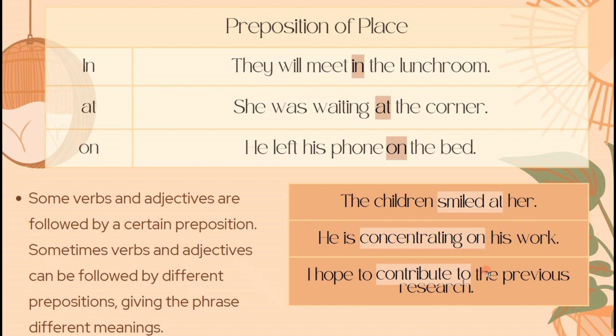Examples of preposition of place: 'in' — they will meet in the lunchroom; 'at' — she was waiting at the corner; 'on' — he left his phone on the bed. Some verbs and adjectives are followed by a certain preposition, and sometimes they can be followed by different prepositions giving the phrase different meanings. For example: 'the children smiled at her' — the verb is 'smiled' and the preposition is 'at'; 'he is concentrating on his work'; 'I hope to contribute to the previous research.'